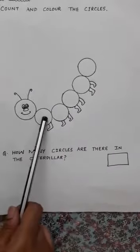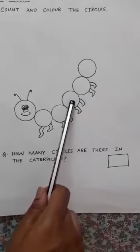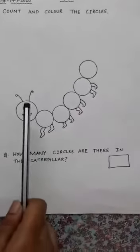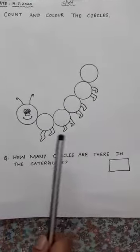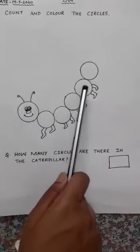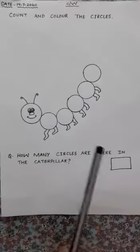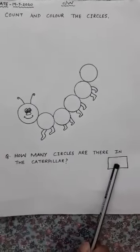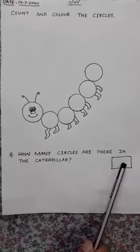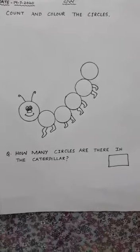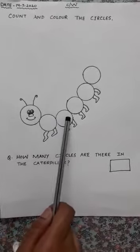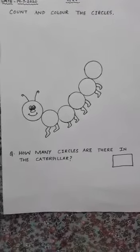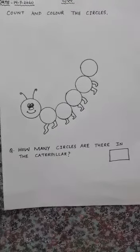So what you have to do? You have to count these circles first. ठीक है? आपको यह सारे जो circles हैं, पहले इन्हें count करना है. You will first count the circles, and when you count all the circles, जितने भी circles आपने count की हैं, वो आपको यहाँ पे लिखना है. Total circles that you have counted, you have to write it here. Okay?